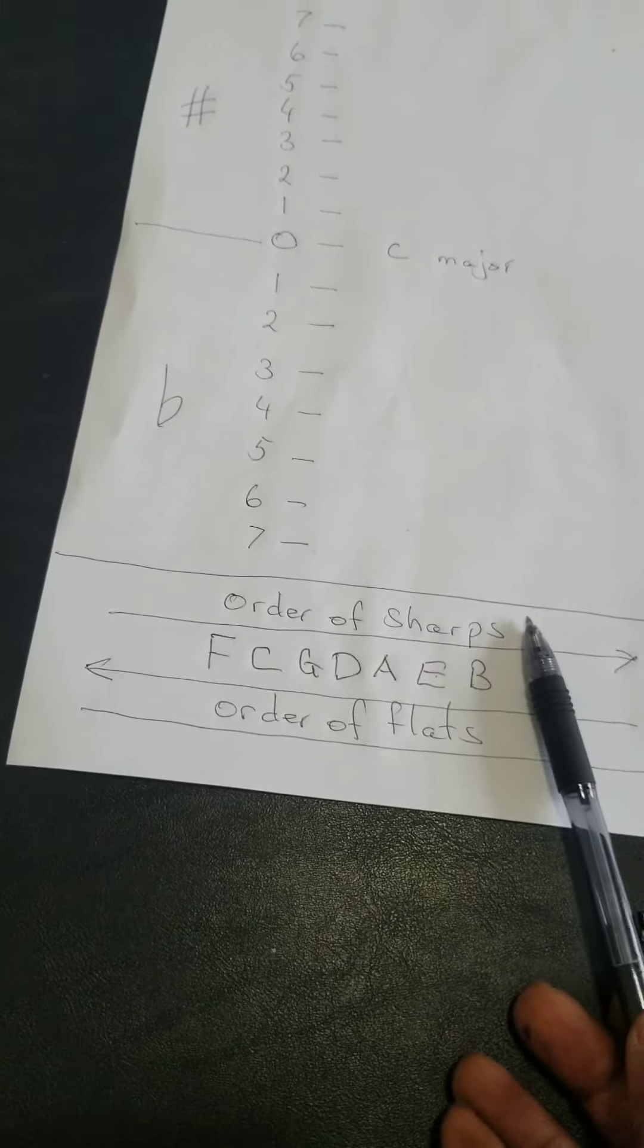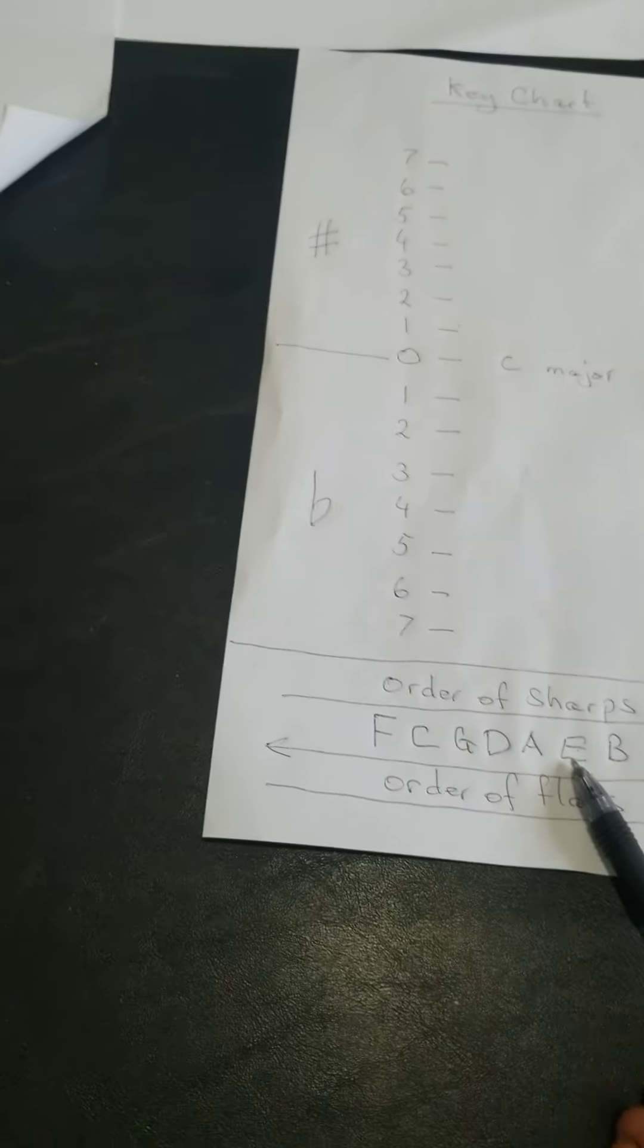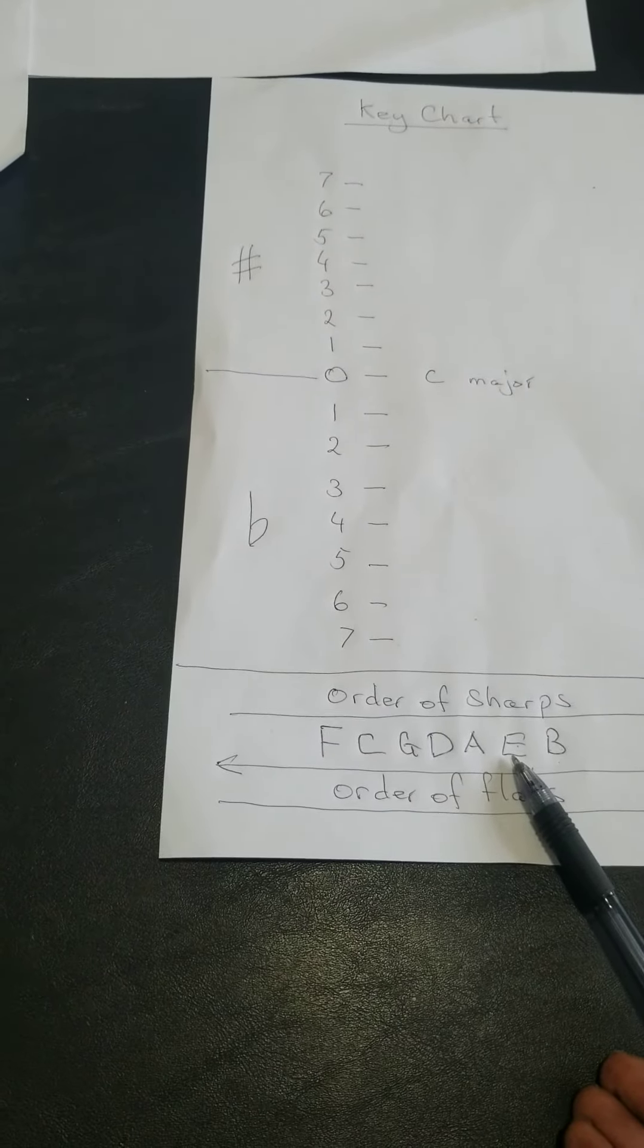Let's look at our order of flats here. We notice that E flat is the second flat that happens in music. And that's our B flat major scale.